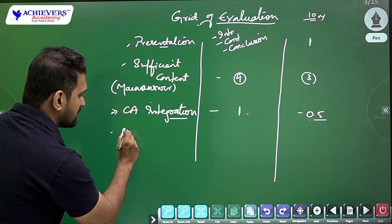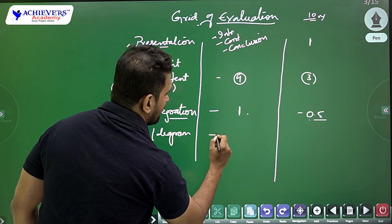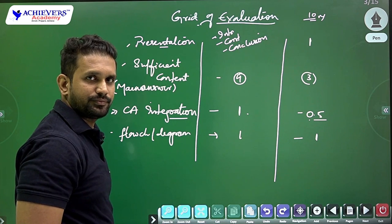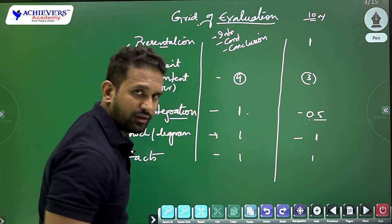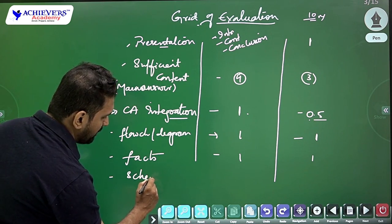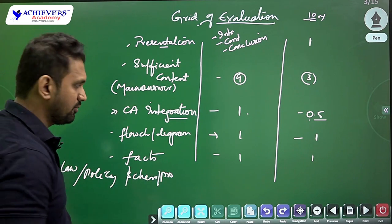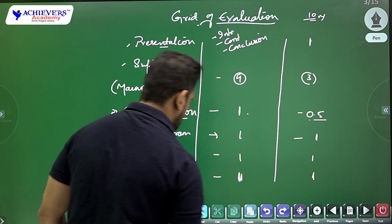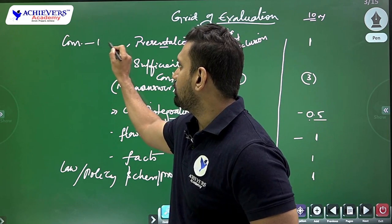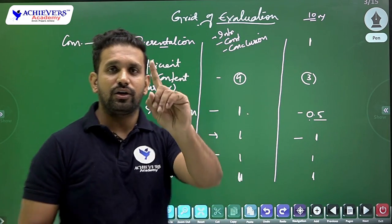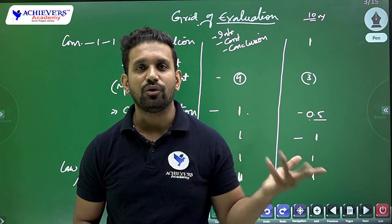Fourth, whether the question requires a flowchart or diagrammatic representation — one mark if done. Fifth, whether the question requires mentioning of facts — one mark if done. Sixth, schemes and programs integration — whether relevant policy, law, or government scheme has been integrated — one mark if done. Seventh, whether you have quoted committee reports or similar sources — one mark. This is how your papers are corrected, and this is how you get marks. It is a systematic, criteria-based evaluation.